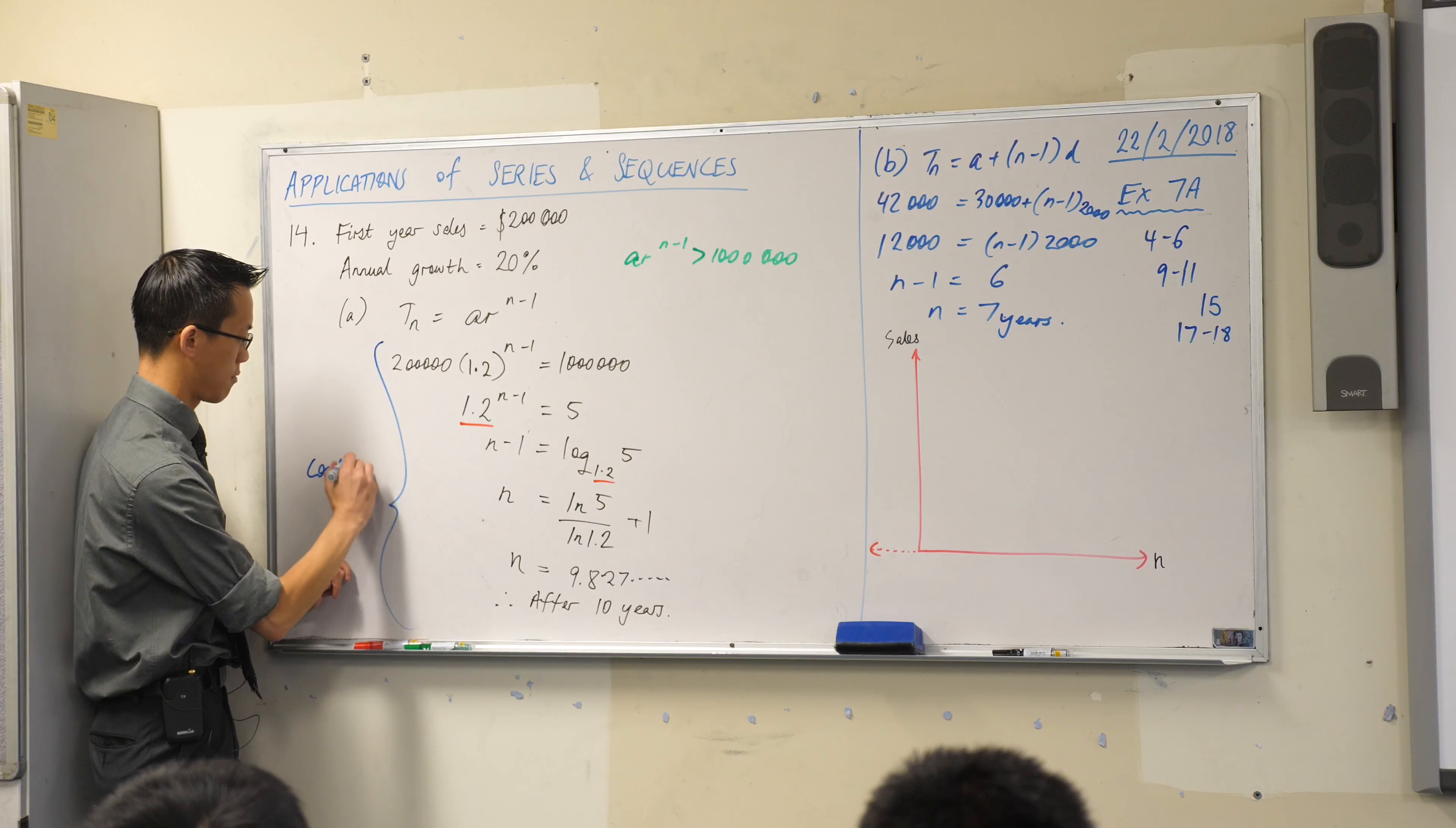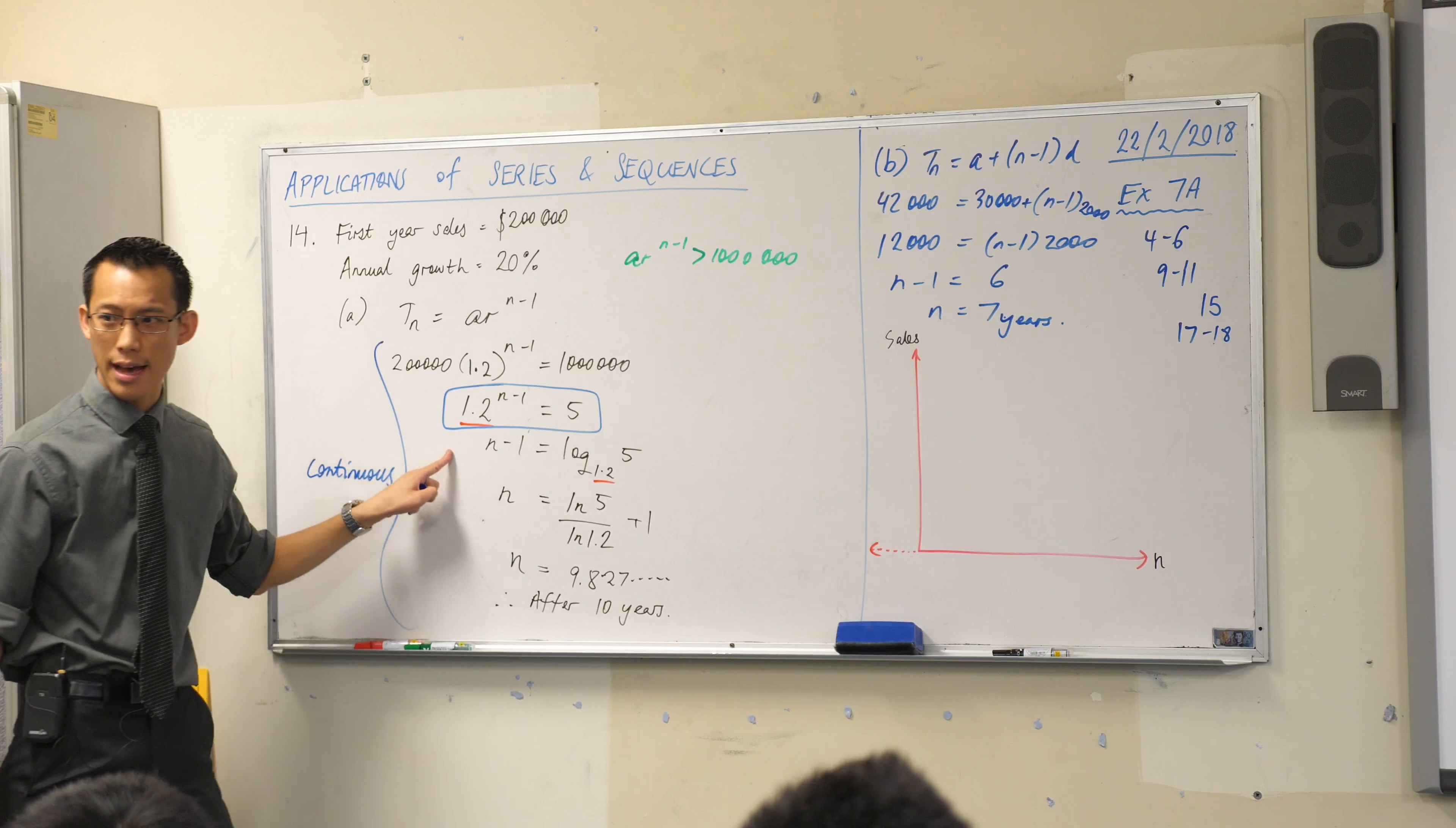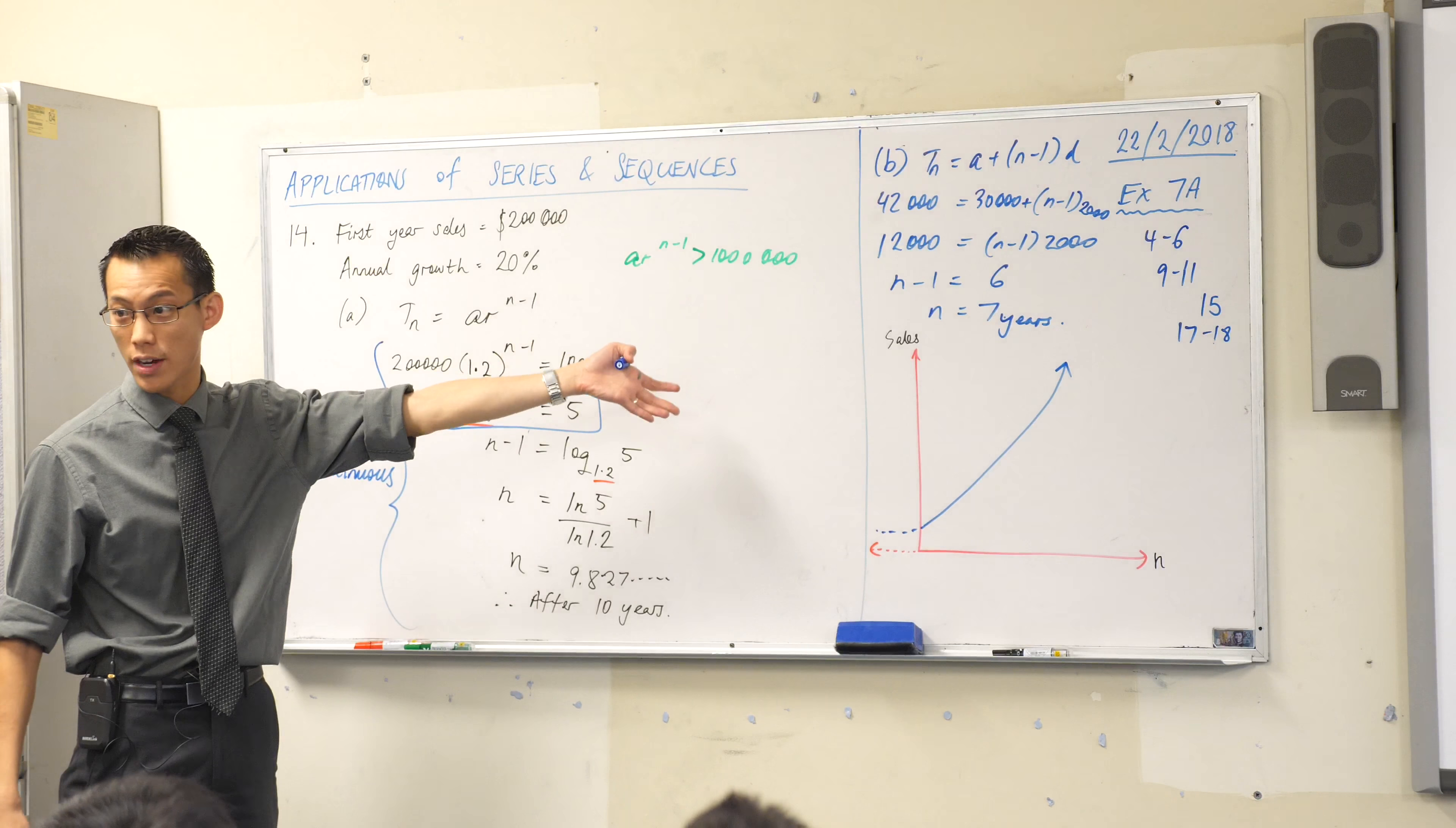Now, what we've done here is we've used a model, which is what we call a continuous model. It's continuous because, have a look at this line here. It's an exponential function, and exponential functions, as you know, just look like that. It's one continuous function, and it's got no breaks.